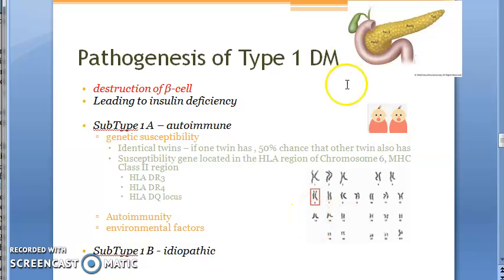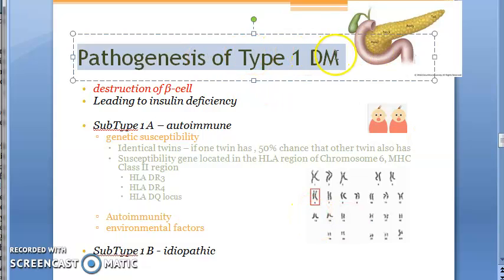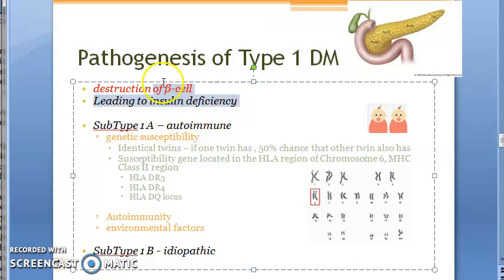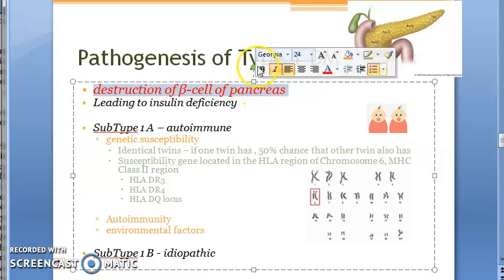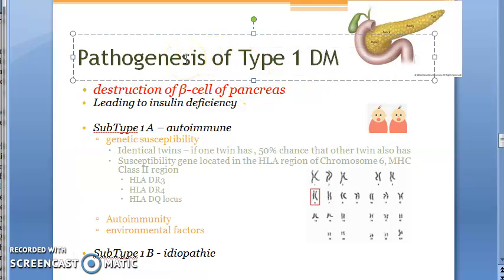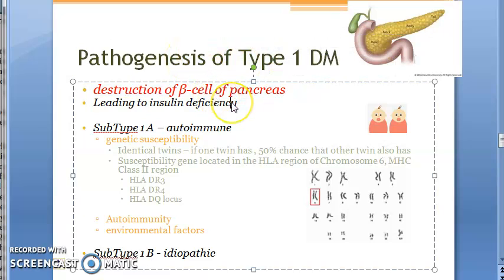In this video, let us look at the pathogenesis of type 1 diabetes mellitus. Here there will be insulin deficiency, because of destruction of beta cells of the pancreas. This is the main cause of type 1 diabetes mellitus. Hence the production of insulin will be less, so there will be insulin deficiency.